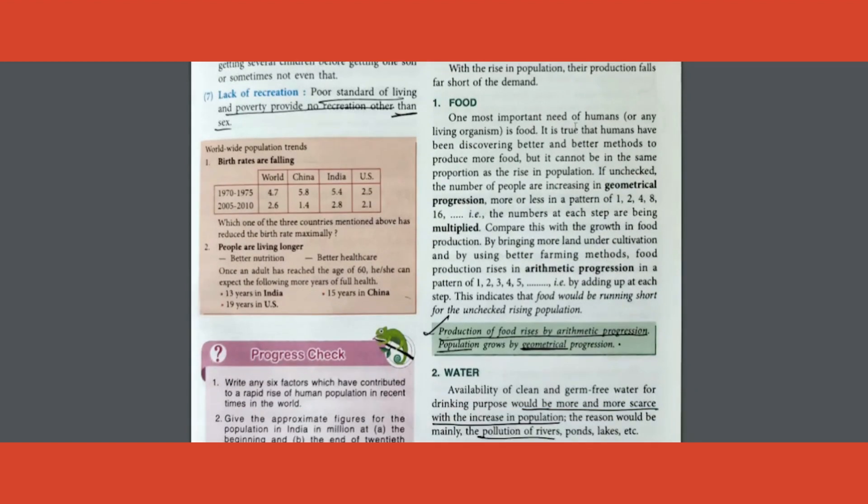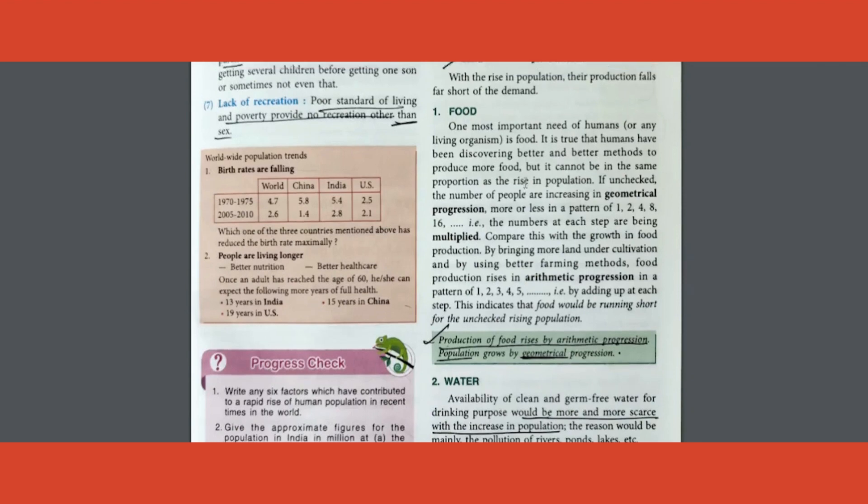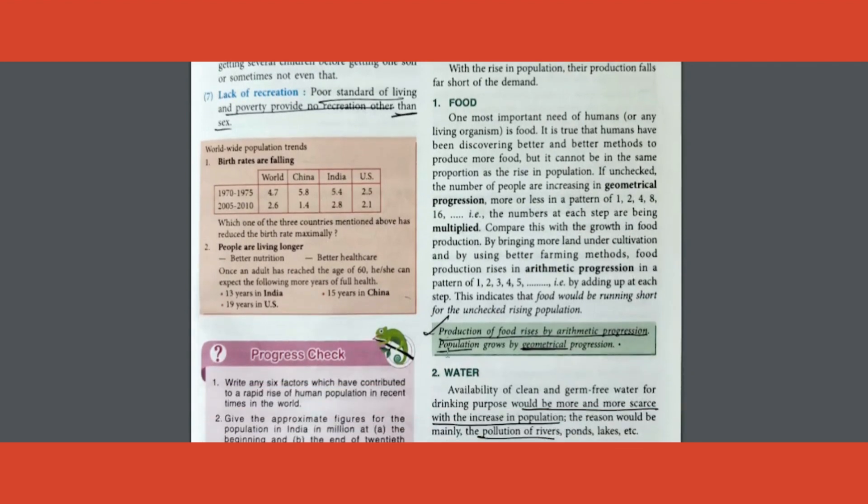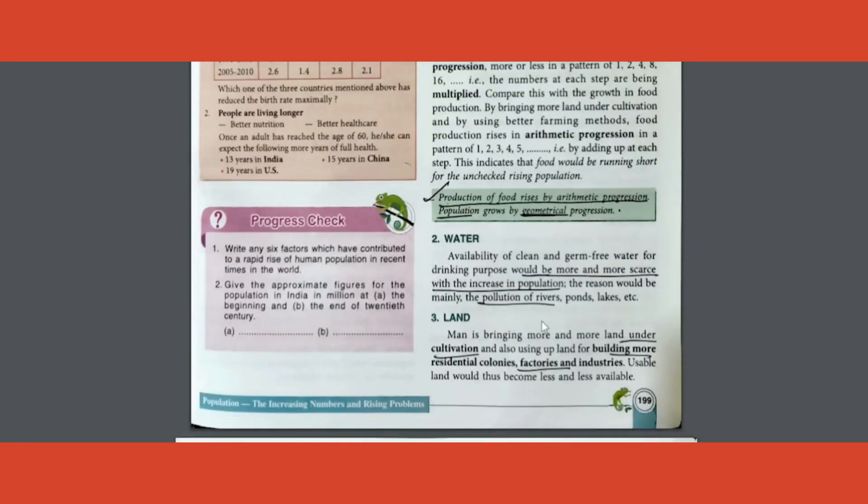How is food getting depleted? Because food is increasing only arithmetically but population is increasing geometrically. One mark MCQ, mark this. I've seen this coming as MCQ: dash progression for food and dash progression for population. So mark that as well.